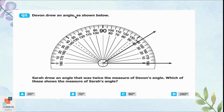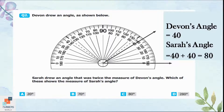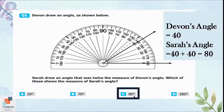Question 2: Deban drew an angle. Sarah drew an angle that was twice the measure of Deban's angle. Which of these shows the measure of Sarah's angle? One arm of the angle is at 0 and the other arm is at 40 or 140, but this is the shape of an acute angle. So Deban's angle is 40 degrees and Sarah's angle is double: 40 plus 40 equals 80 degrees. That is option C.